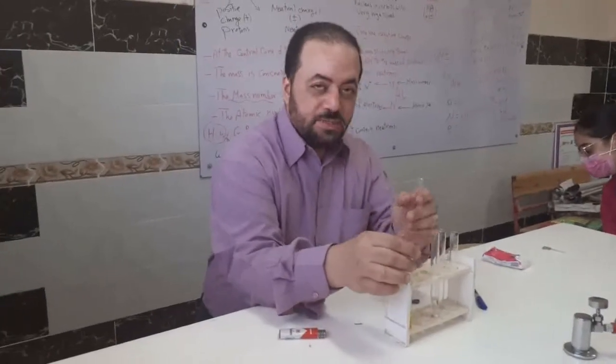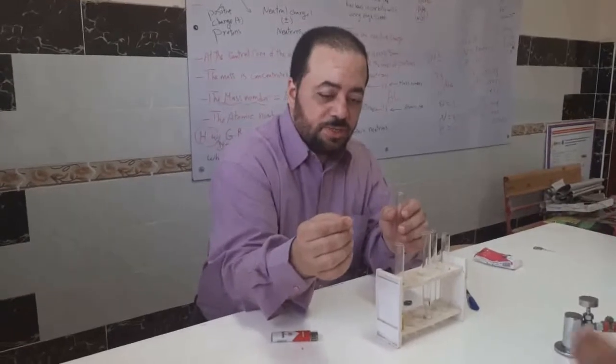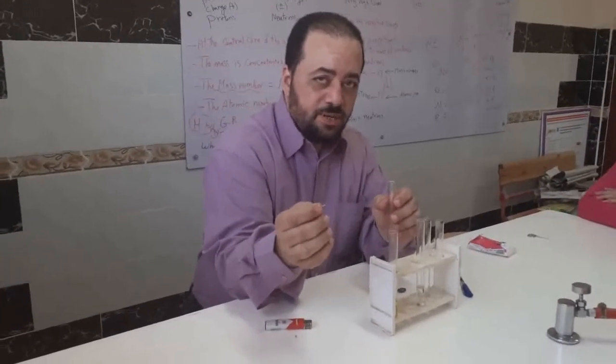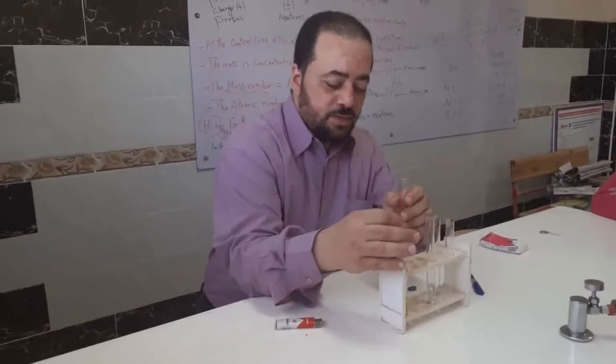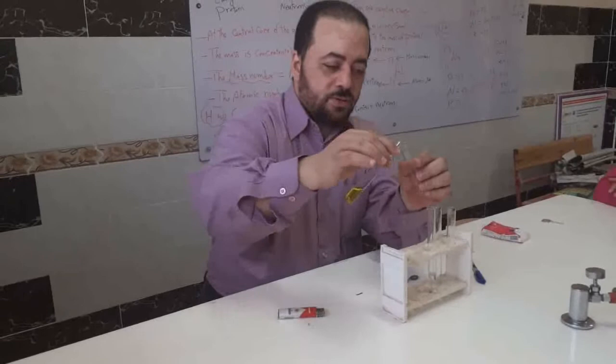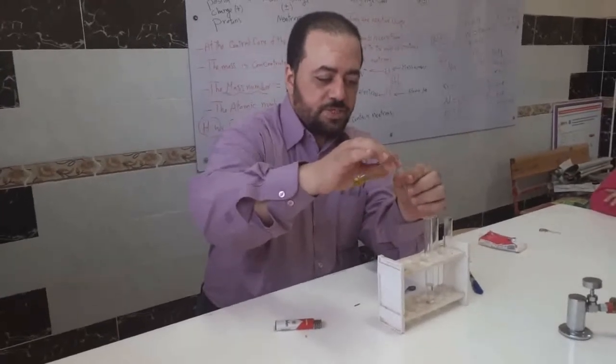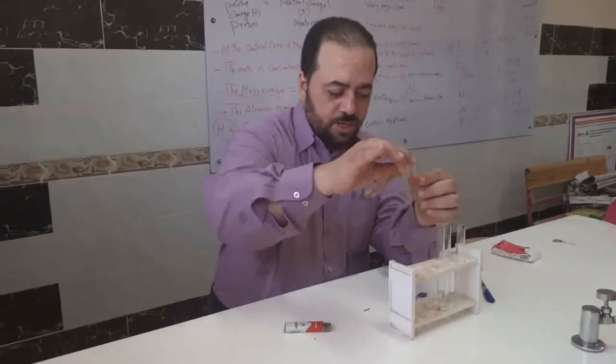Now we do the experiment to prove the reaction between magnesium as a metal and dilute hydrochloric acid. We put some dilute hydrochloric acid in the test tube, as we show now.